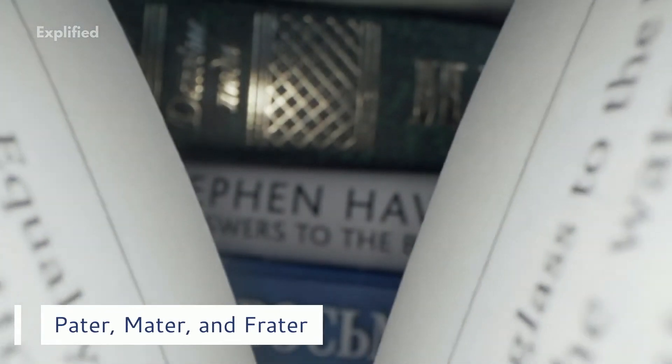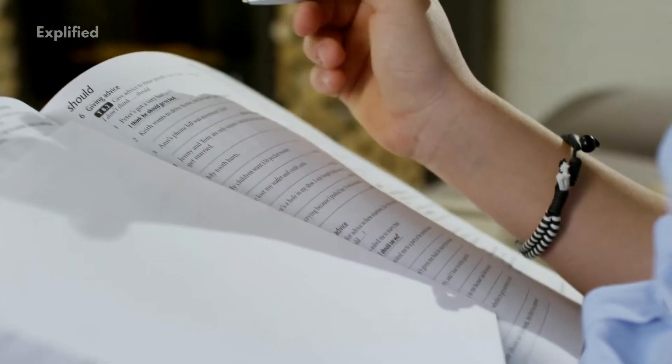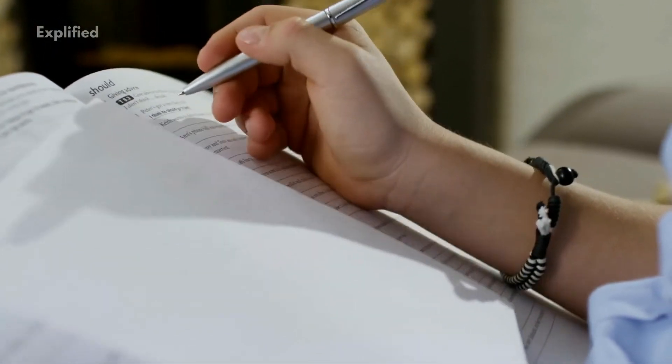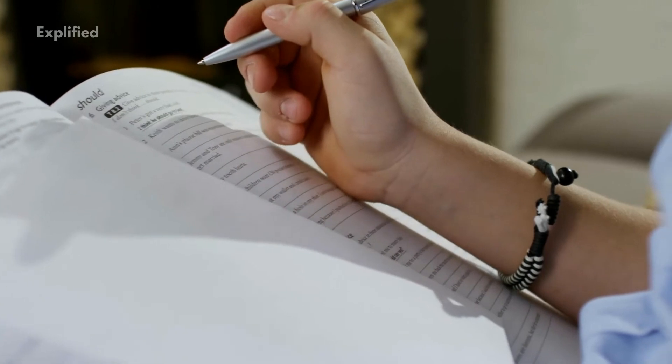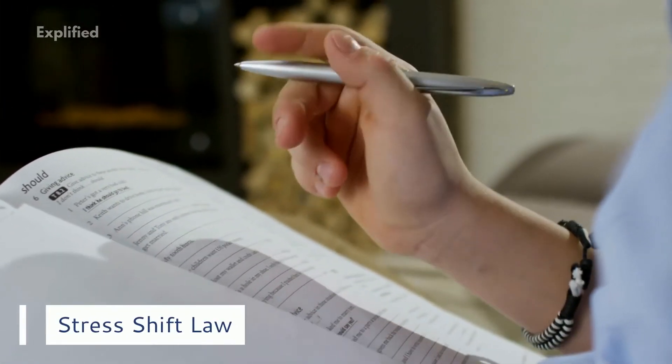For example, English father, mother, and brother possess Germanic equivalents, while the original Indo-European forms are pater, mater, and frater. The final syllables of these show t shifting to d through a double consonantal shift. This is why Werner's law is also known as the stress shift law.